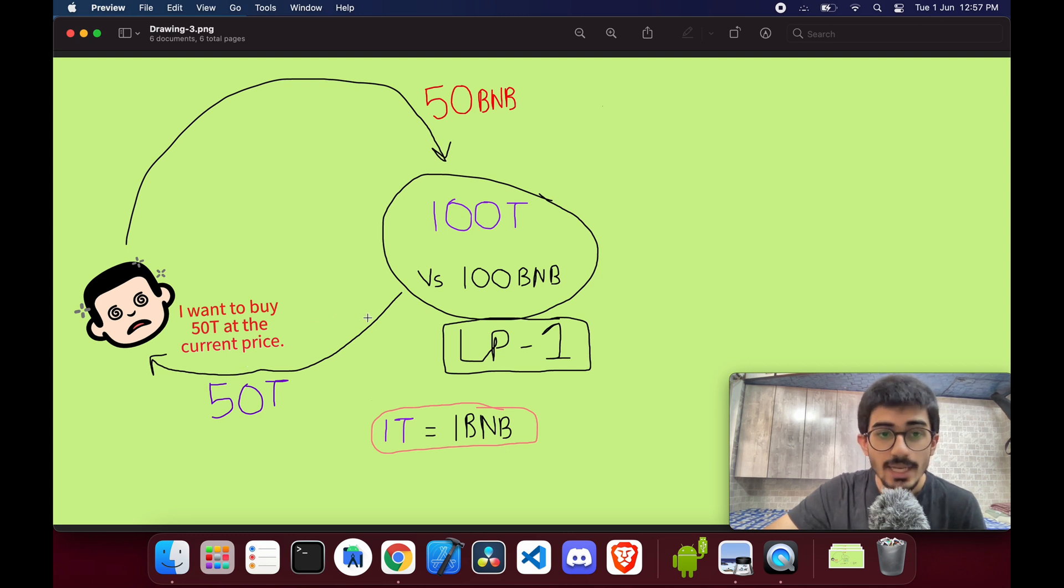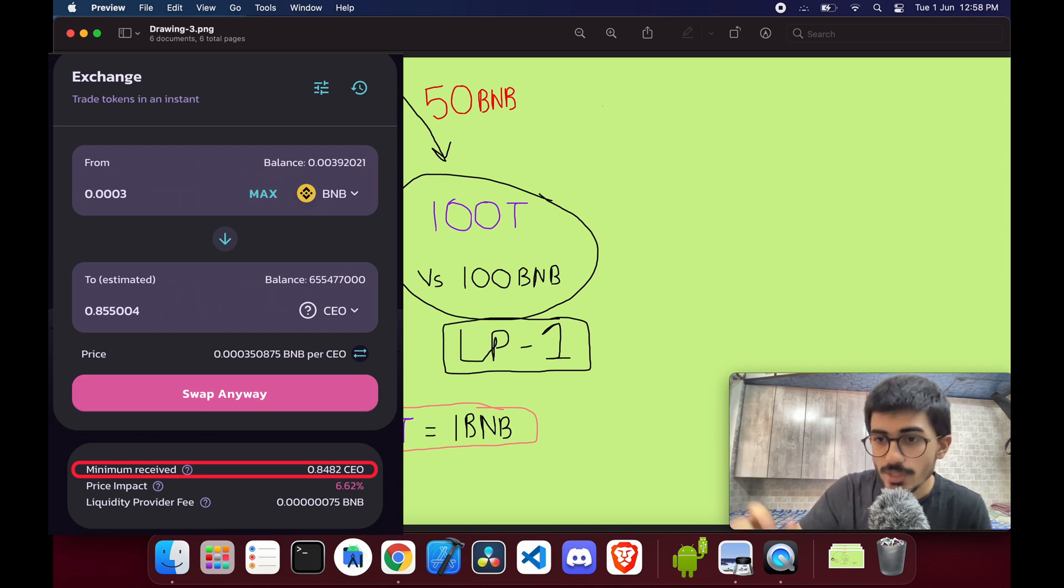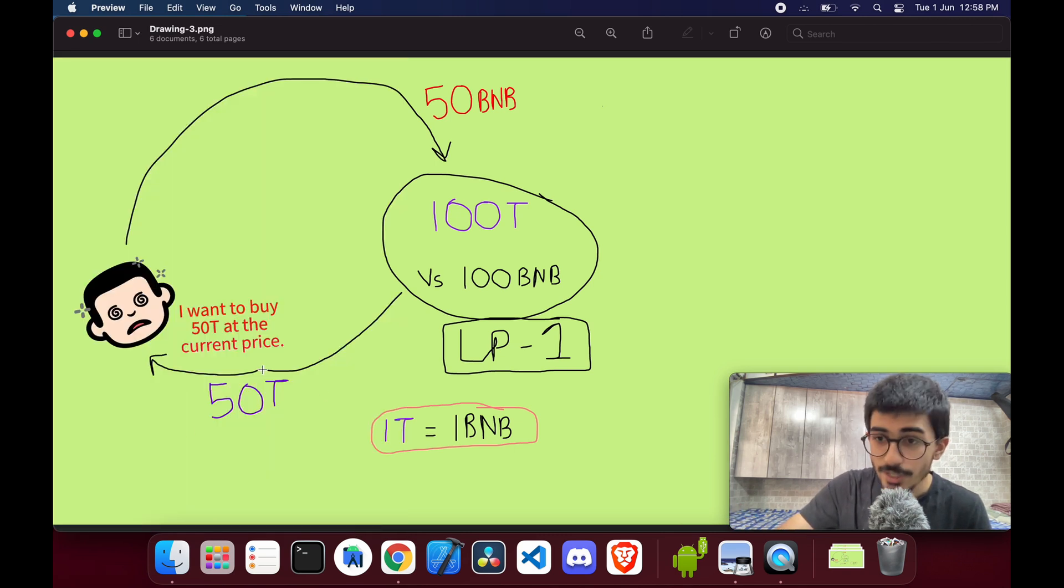He'll get way less than that because of slippage - there'll be fees, there'll be all sorts of things. So he puts in 50 BNBs, he gets out 50 tokens, whereas on PancakeSwap if you do that, you will get an estimated amount - that amount of tokens that you'll get after the transaction happens. So look at that and back calculate it, and you'll understand that you're not getting the entire amount. Say for example you were getting 50 tokens, in the estimated part you will be receiving only say 40 or 30 tokens.